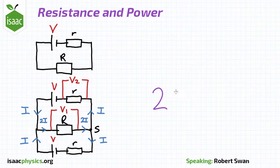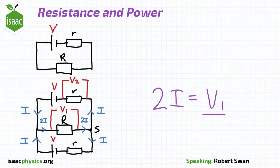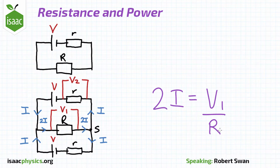From the first part of the question, we have an equation relating i, v1, and uppercase R. As an intermediate step of solving that part, we also found i in terms of v, uppercase R, and lowercase r.